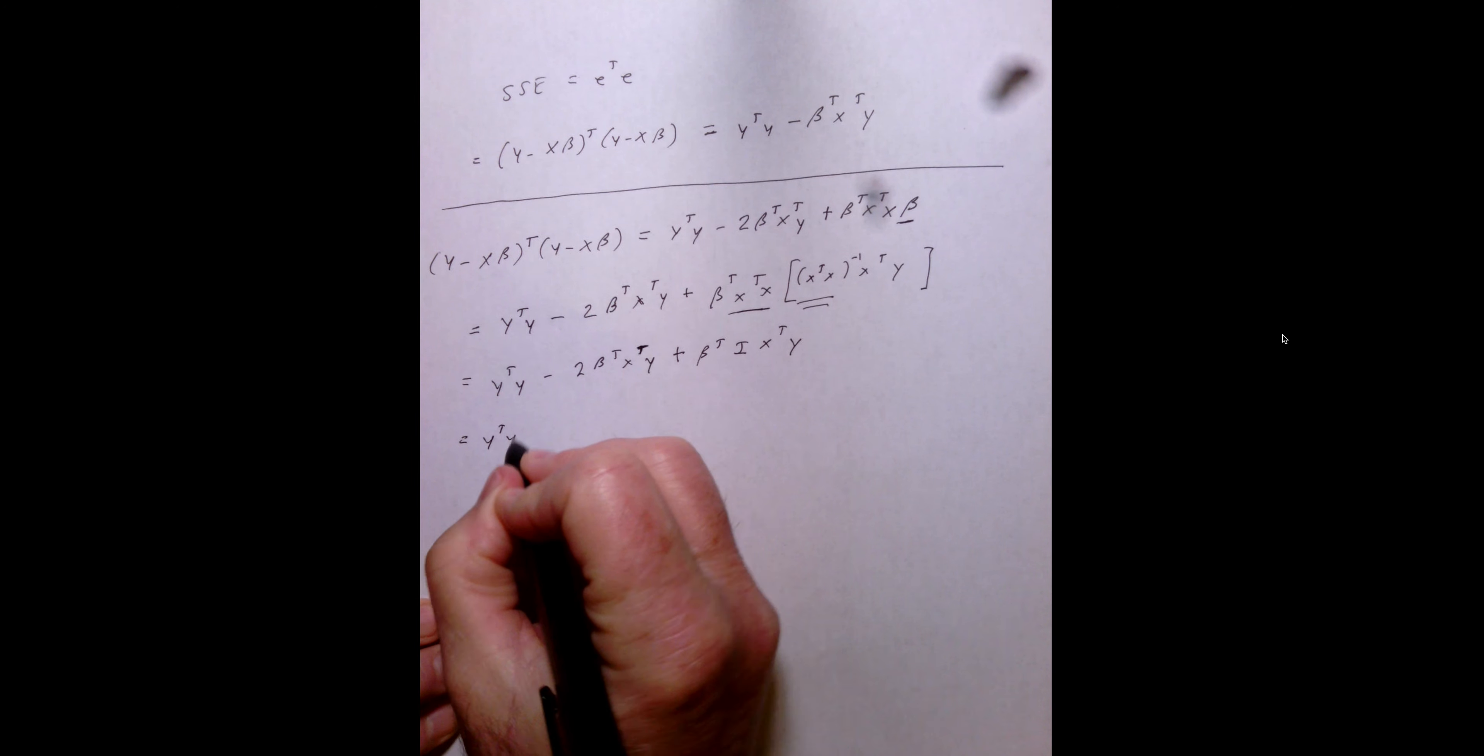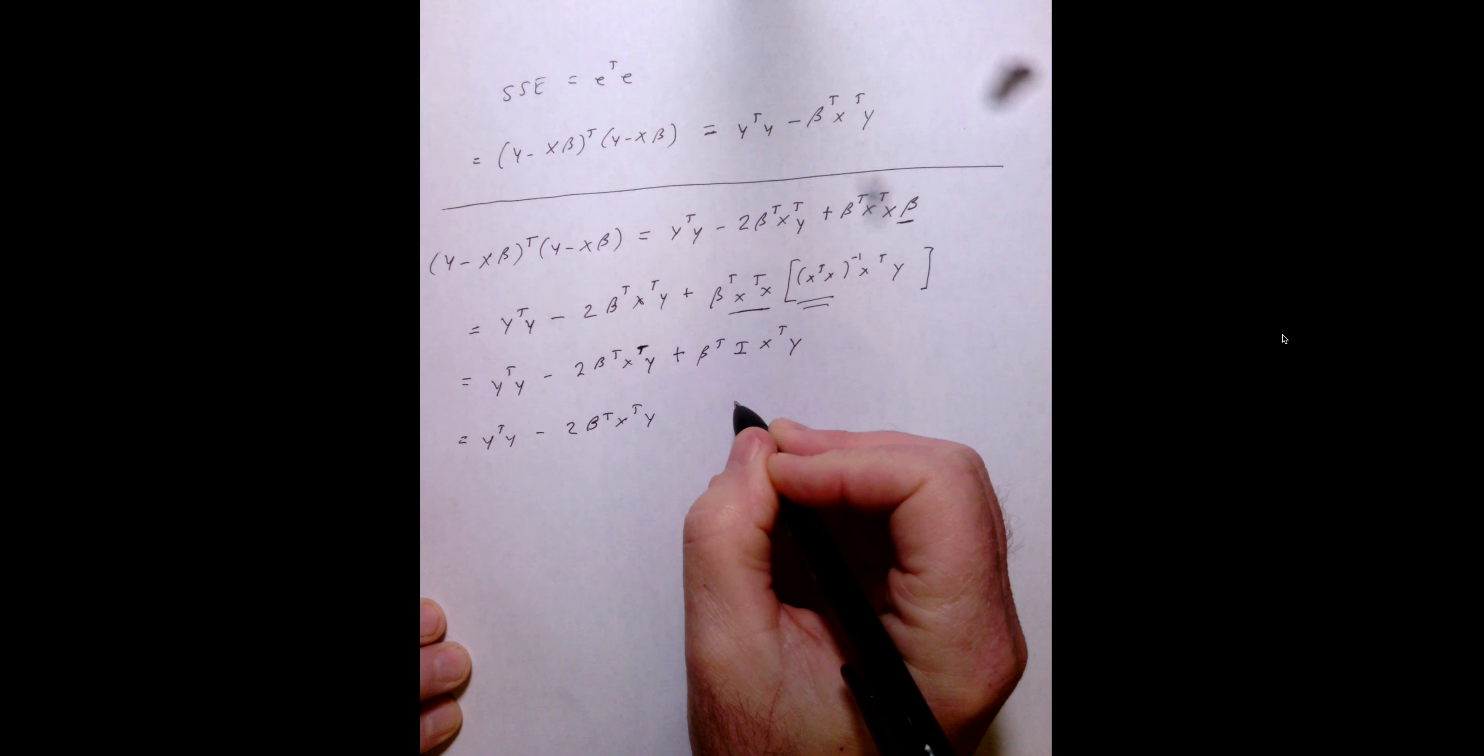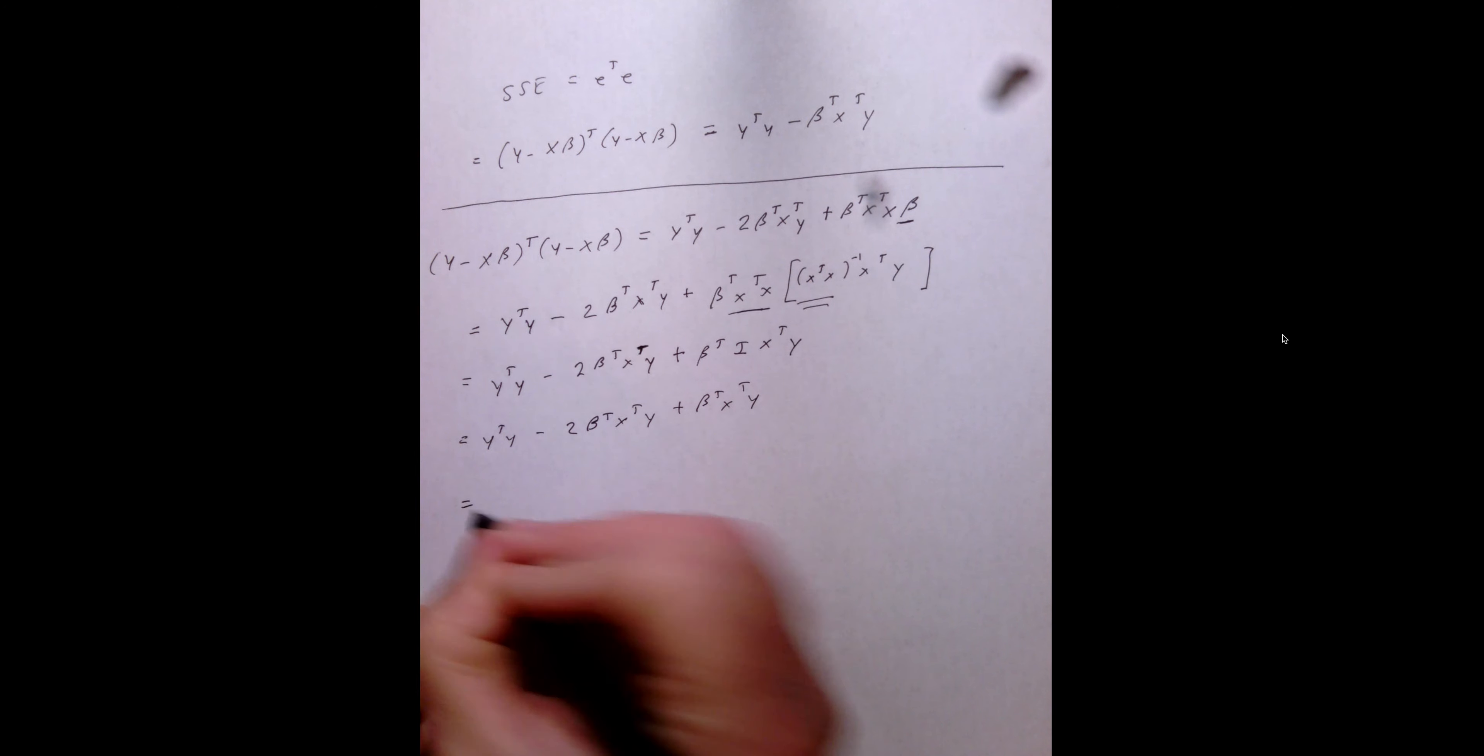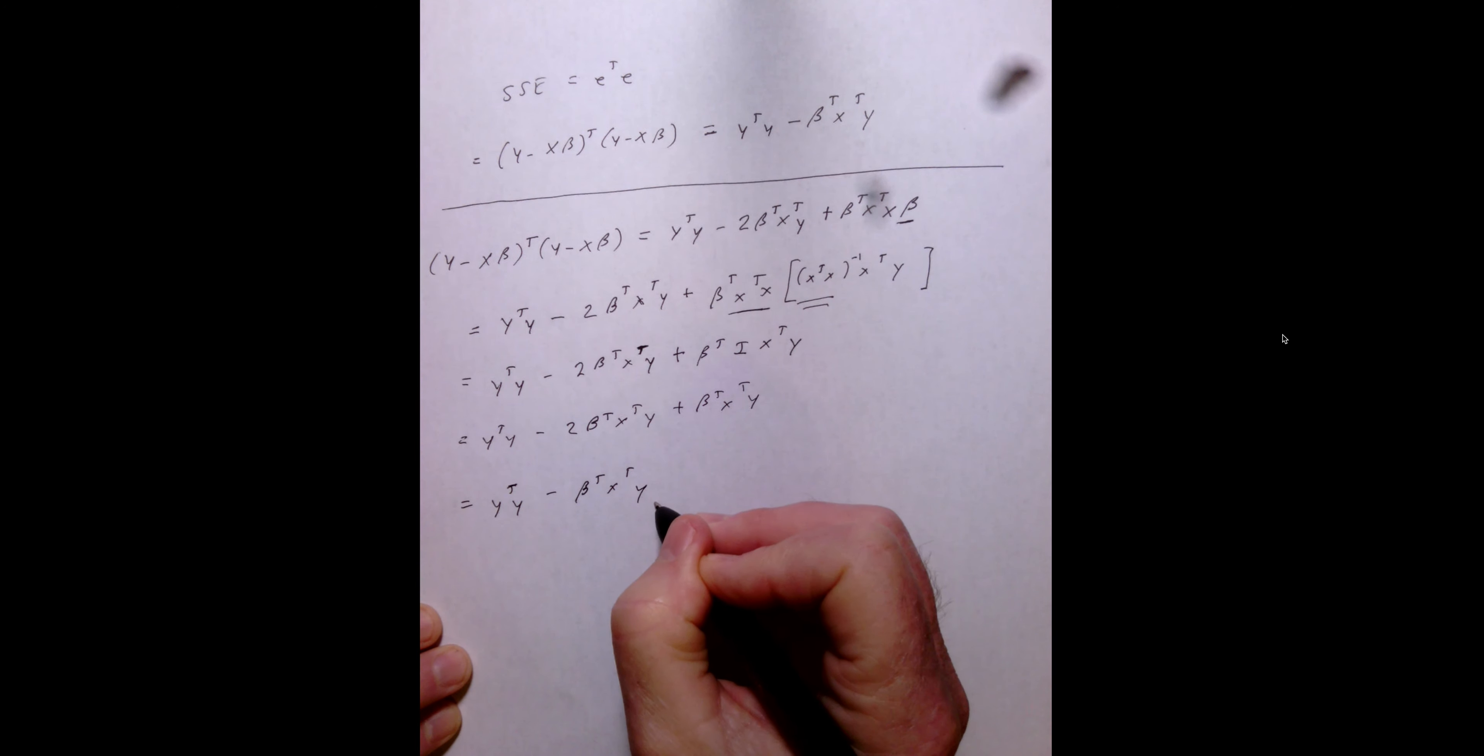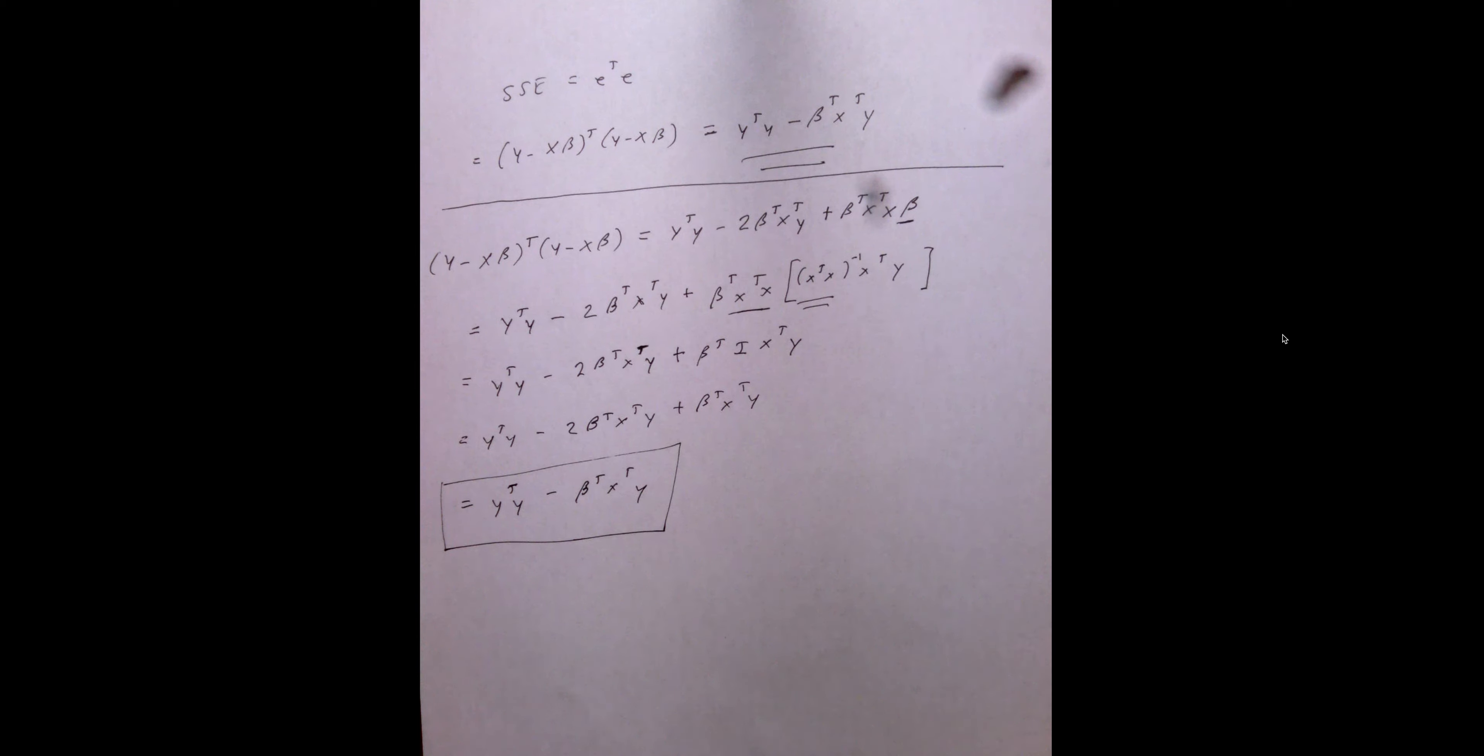So, y transpose minus 2 beta transpose x transpose y. And, of course, this is just beta transpose x transpose y. So, negative 2. So, we end up with y transpose y minus beta transpose x transpose y. So, we get exactly what we set out to prove.